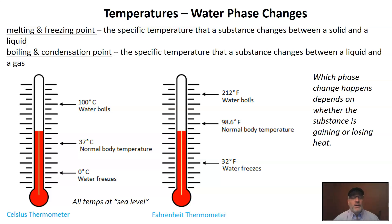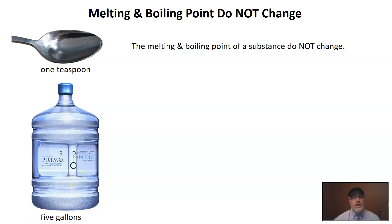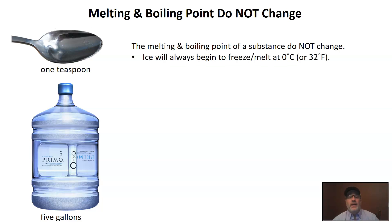These are just called freezing and melting points. Melting and boiling points do not change — this is a favorite question on the science EOG. Water is always going to melt at 32 degrees Fahrenheit or zero degrees Celsius. Water is always going to boil at 212 degrees Fahrenheit or 100 degrees Celsius. That is always going to be the specific temperature that that happens at.